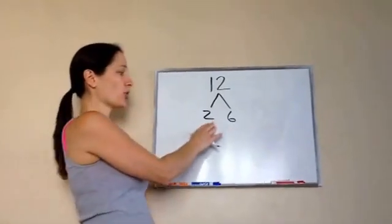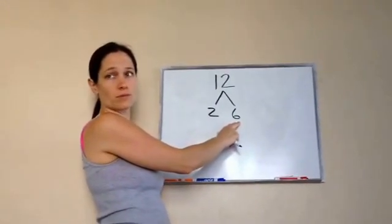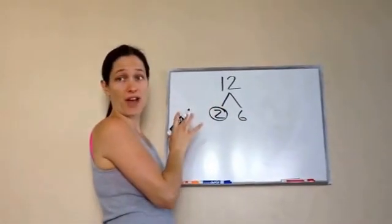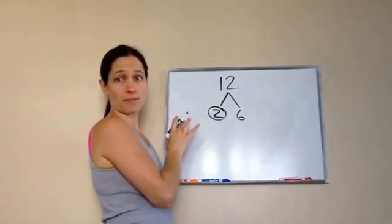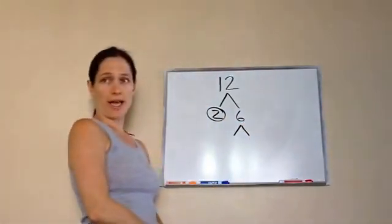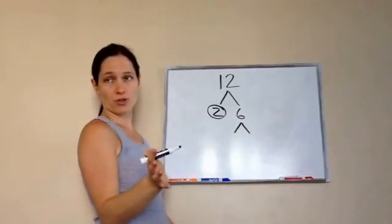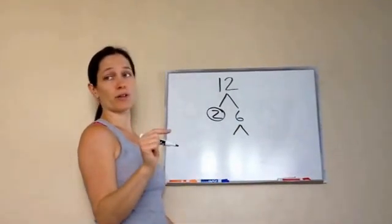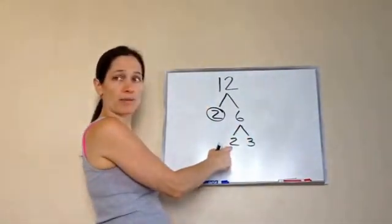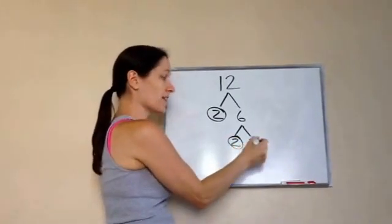So 6 times 2. Is 2 or 6 a prime number? 2 is. Circle it. That means you're done with that side of the tree. Now 6 is your new number to look at. What times what equals 6? Never use 1. 2 times 3. Is this a prime number? Yes. Is this a prime number? Yes.